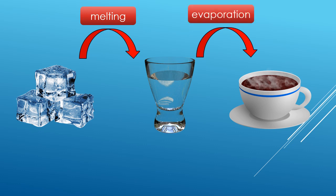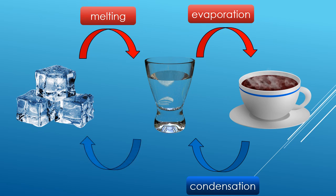This process can be reversed. When steam is cooled, condensation occurs and water droplets are formed. When water is frozen it turns back into ice.